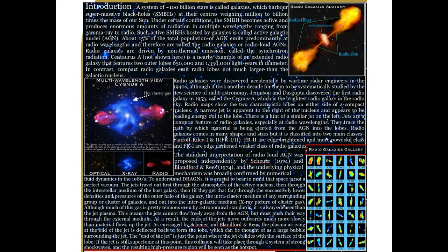A system of billions of stars is known as a galaxy which harbors a supermassive black hole at its center. A black hole is called supermassive when it weighs around 10^6 to 10^9 times the mass of our Sun. Under certain conditions, the supermassive black holes become active and produce enormous amounts of radiation in multiple wavelengths ranging from gamma ray to radio.